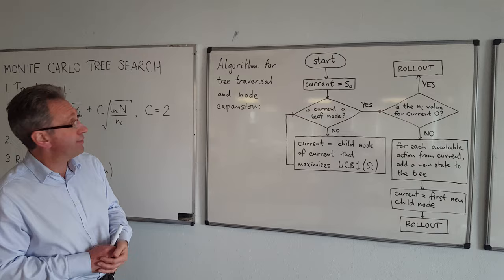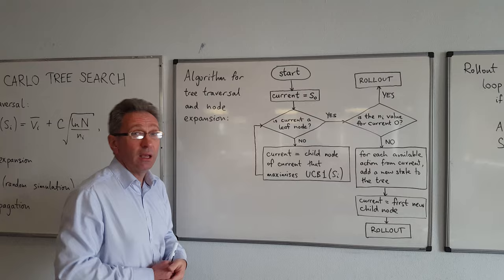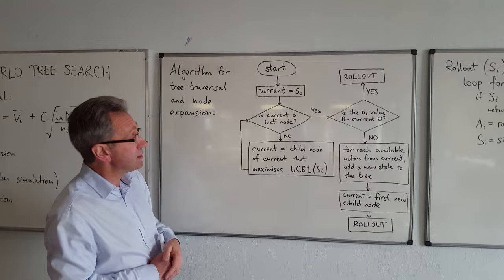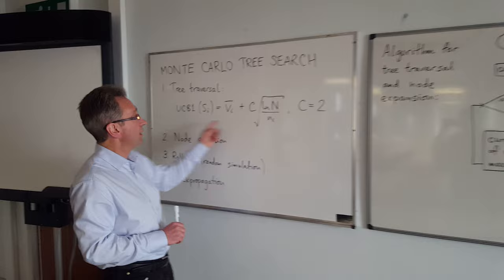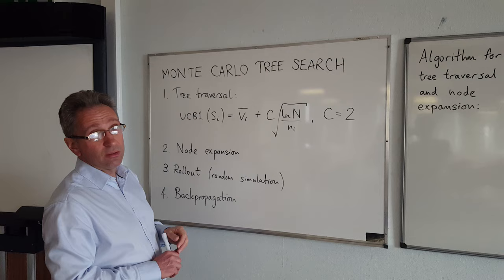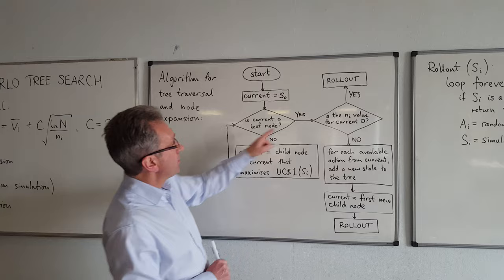Let's look at the algorithm for the first two phases: tree traversal and node expansion. You start with S0, the initial state, as the current state. You then ask yourself, is it a leaf node? If it's not a leaf node then you have to choose which child of the current state you're going to explore. You do this by calculating the UCB1 value of each of the states and then choosing the one that maximises that value. You keep doing this until you get to a leaf node in the tree.